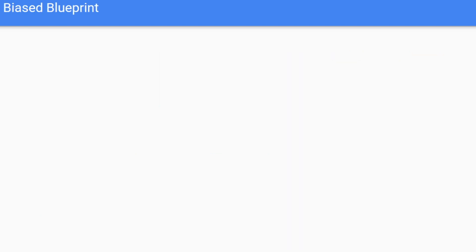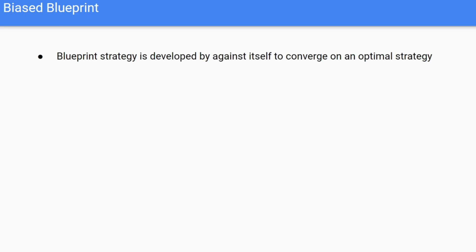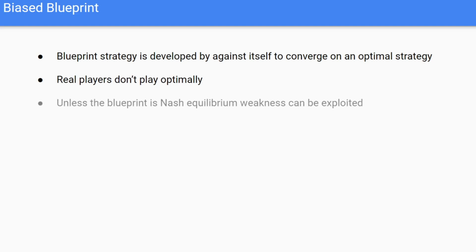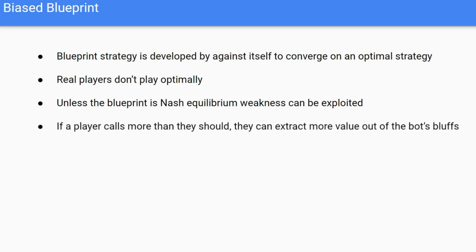Next, let's go over playing against biased blueprints. The blueprint strategy we develop is basically playing against itself, so it's going to converge on an optimal strategy. But this is not actually how real players play. Unless we are at a true Nash equilibrium, weaknesses can be exploited. For example, if a very passive player calls more than they should, they can extract value over a bot by calling bluffs more than an optimal player would.